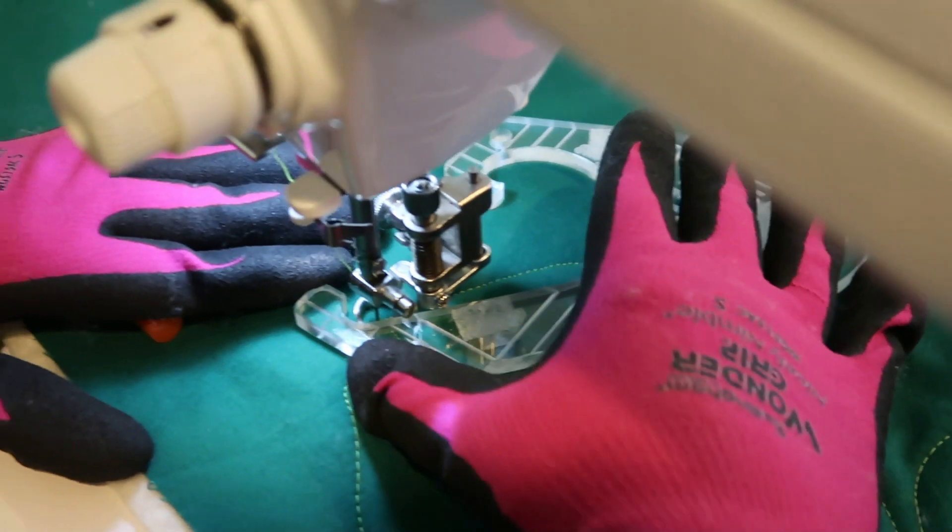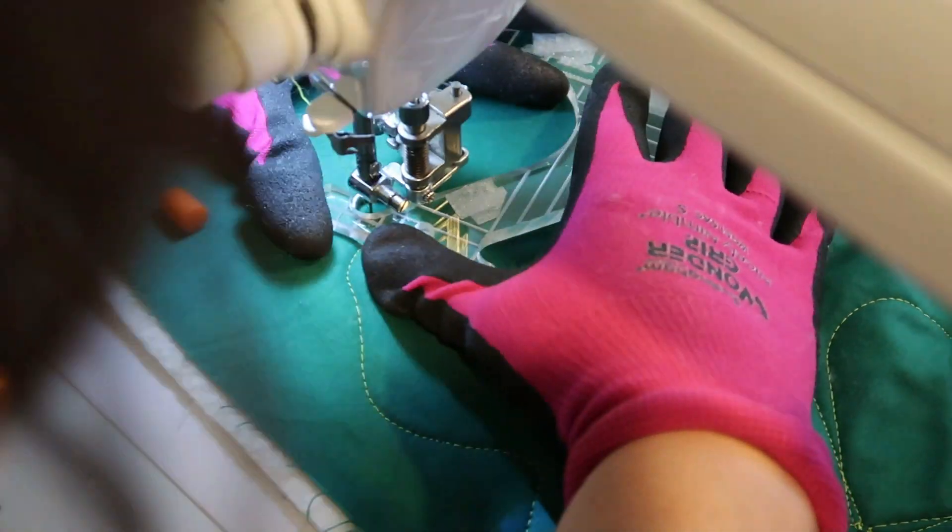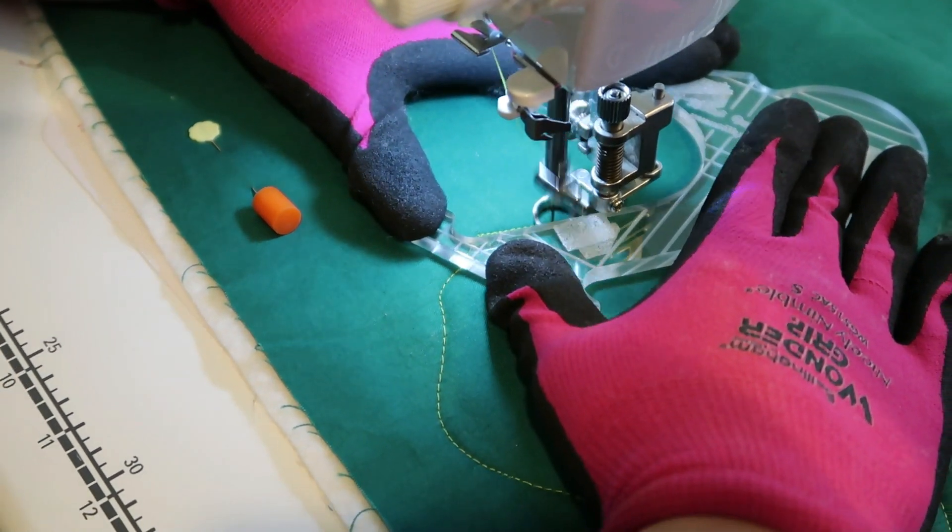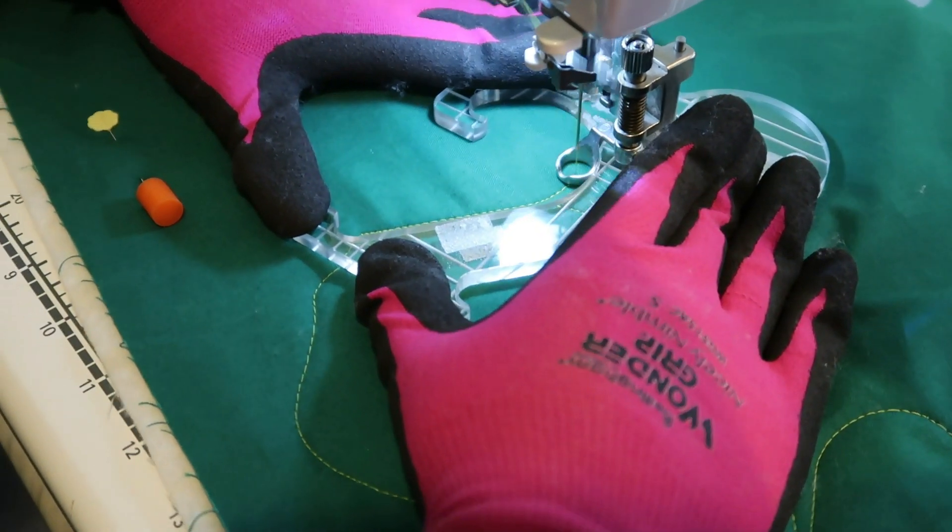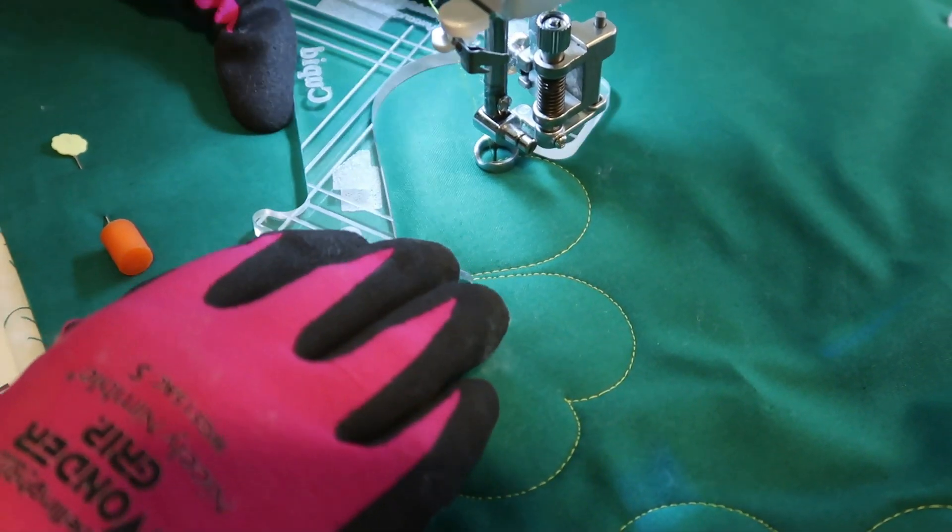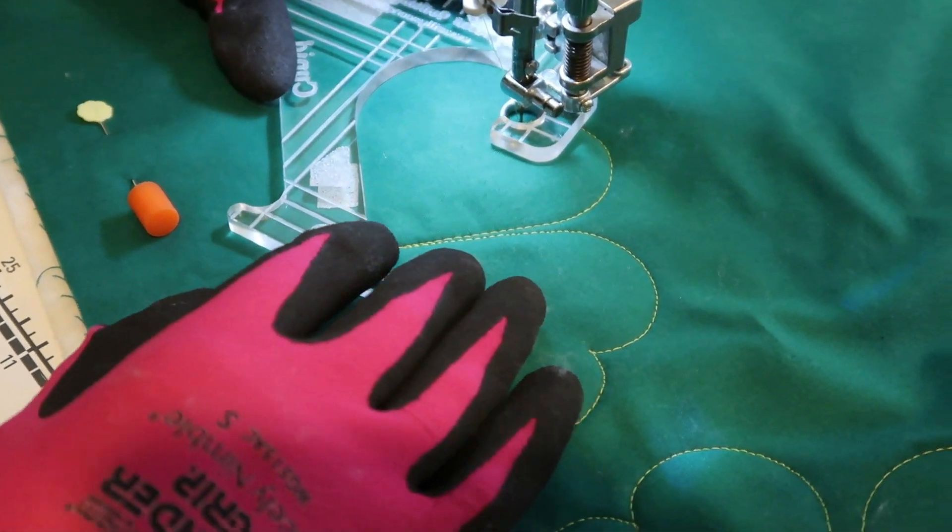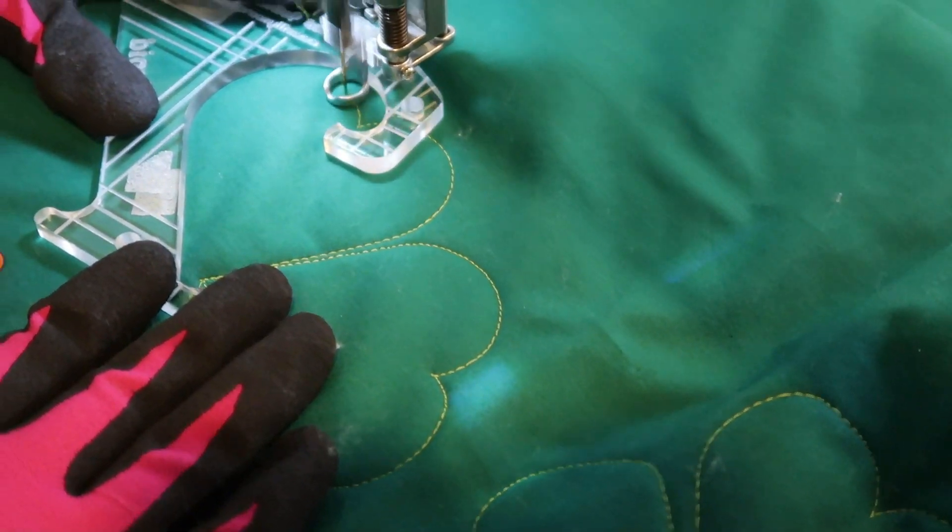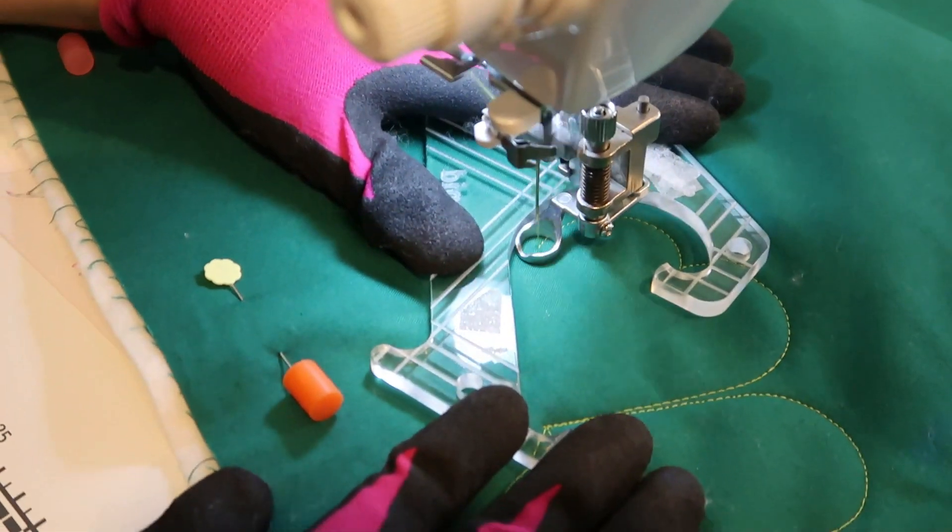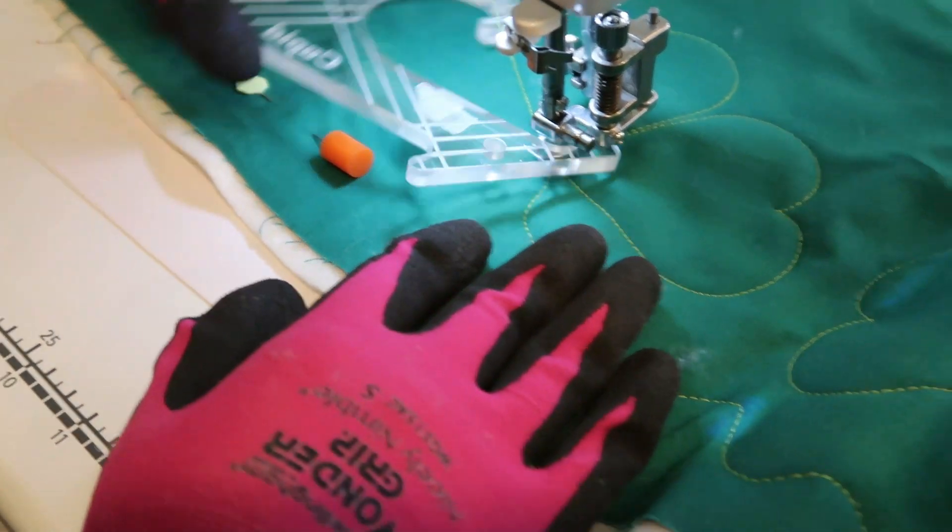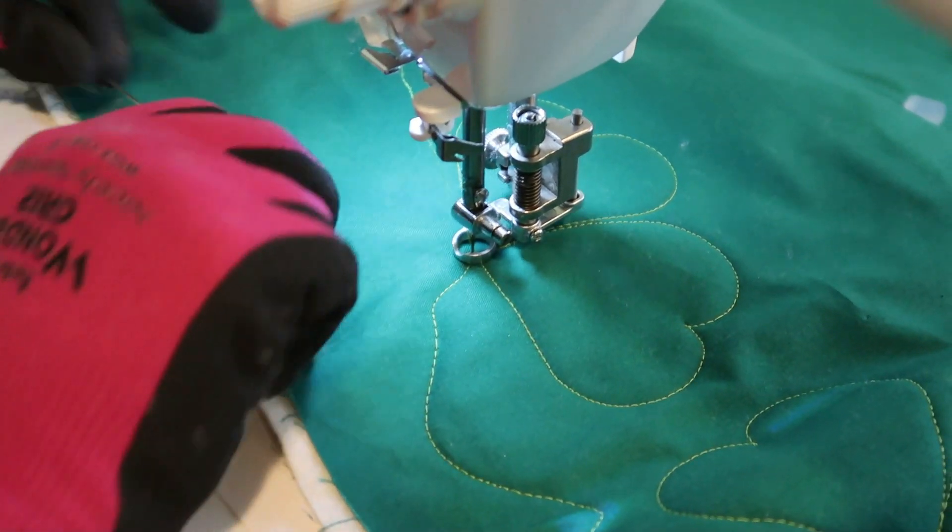The nice part when you're doing it on your domestic machine versus a little long arm is you get to put the ruler in the position you want to and move the quilt in the direction you prefer sewing in and find the way that works. Even though I do like practicing for multiple positions just to get comfort, and you can see just coming along here. We're starting to get another beautiful little shamrock, so cool.